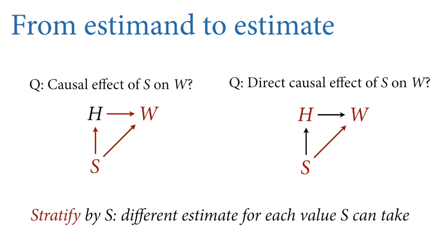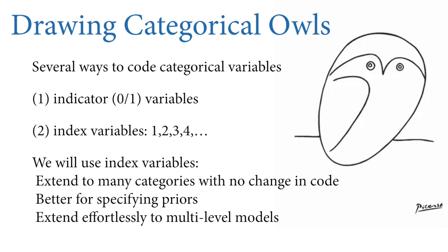For both of these, we need to stratify by the sex variable to get a different estimate for each sex in the dataset. How do we do this mechanistically in a linear model? There are multiple ways. One common default in software is indicator variables — sometimes called dummy variables, but let's call them indicator variables. These are zero-one variables that turn on some parameter added to the model. Most linear modeling software constructs indicator variables for you invisibly when you pass a factor variable, but in this course we build everything ourselves.